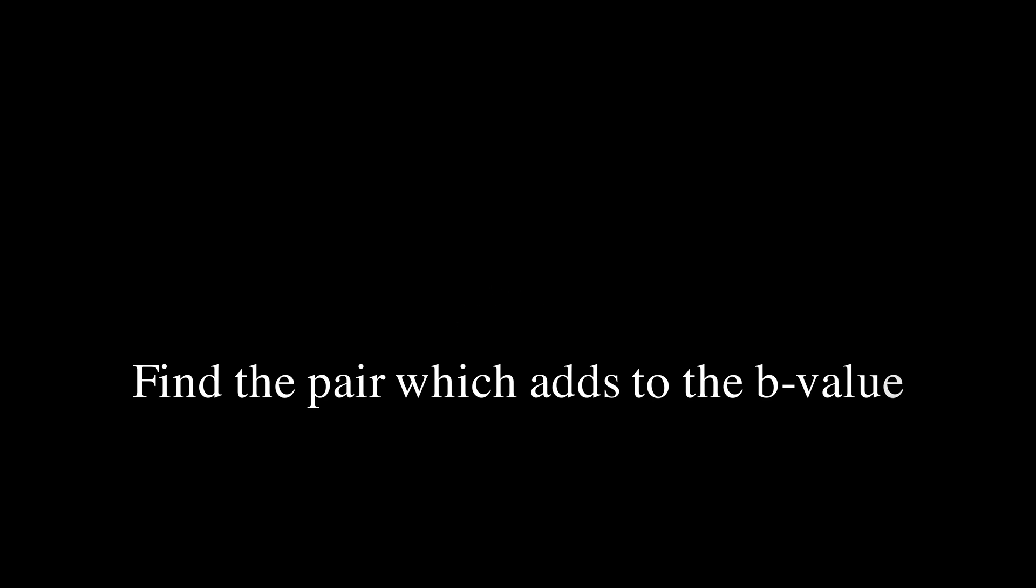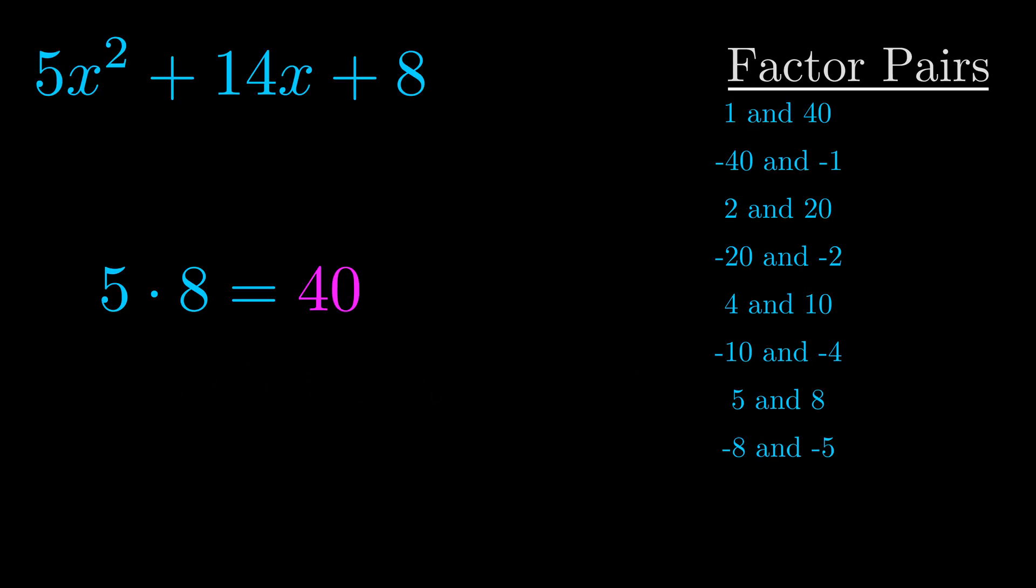The b value is the coefficient on the x term. That's the middle term, the one that we haven't done anything with yet. And really this is the only factor pair that we need.